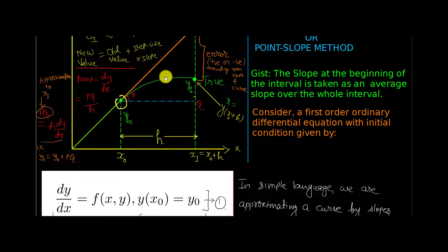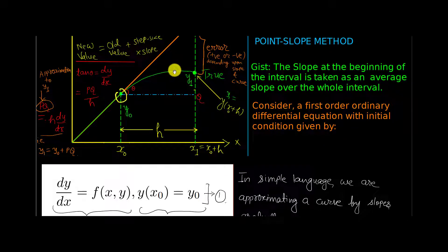This first tangent, this is the second tangent, this is the third tangent, this is the fourth tangent, and so on. Continuously, you are drawing tangents at different points, and hence you are basically approximating the curve on the basis of tangents. This is the power of Euler's method.